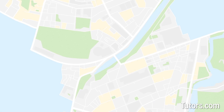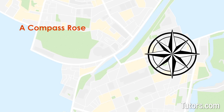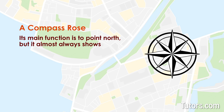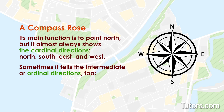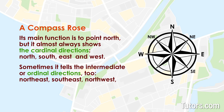Another thing you will find on a map is a compass rose. Its main function is to point north, but it almost always shows the cardinal directions — north, south, east, and west. Sometimes it also shows the intermediate or ordinal directions: northeast, southeast, northwest, and southwest.